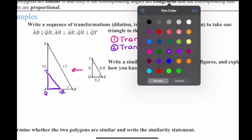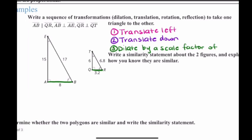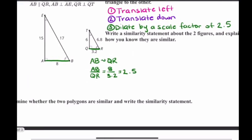Now that triangle is right where I want it, so I can go ahead and perform a dilation. The important part is: by what scale factor? To figure that out, if you look at my previous video on side-angle-side and side-side-side, AB matches with QR. So I divide AB by QR — AB is 8, QR is 3.2 — and you get 2.5.